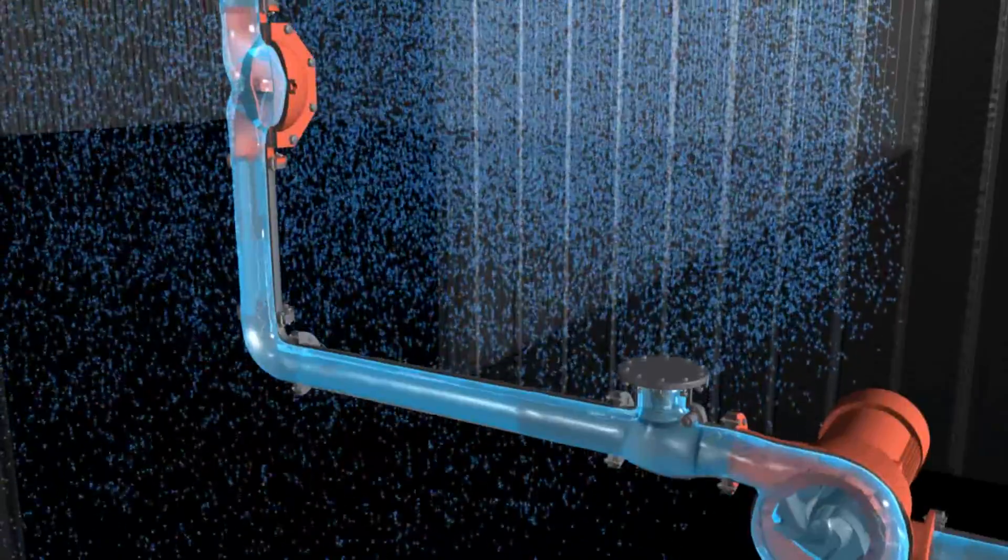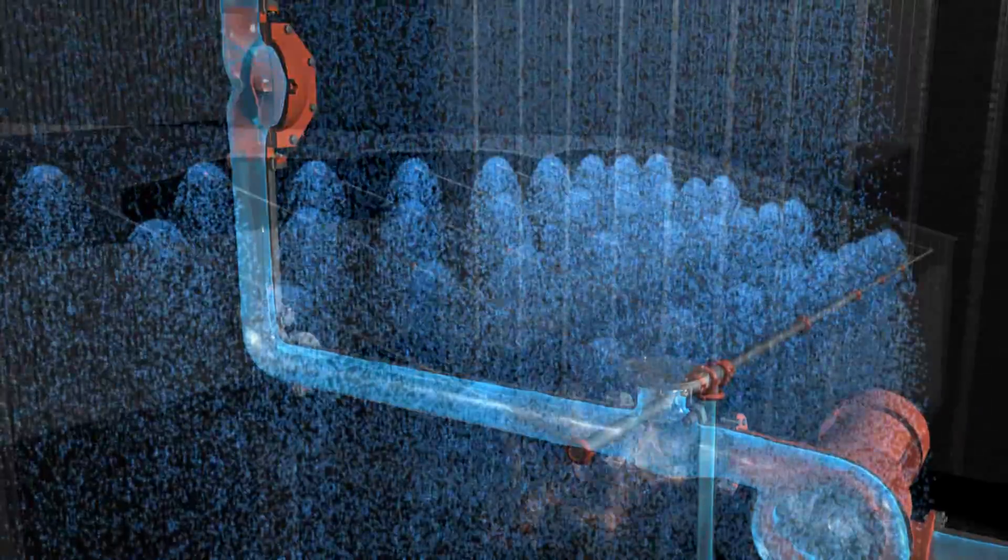If the sprinkler system sustains the pressure from the deluge valve, all heads supply water to the building.